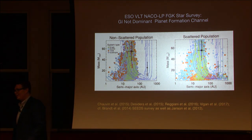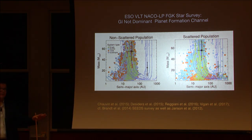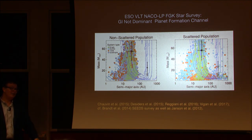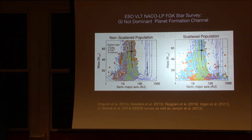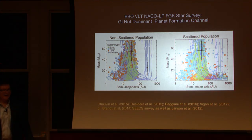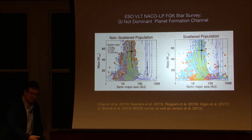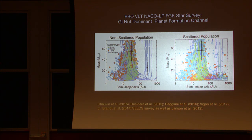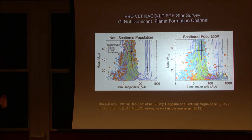We conclude that gravitational instability, while it surely happens sometimes, is not a major channel for gas giant planet formation at large orbital radii. A similar conclusion in a related sense was done by Brandt on the SEEDS survey, pointing out that the objects you do discover have a mass function weighted toward top-heavy things — more like a companion mass ratio distribution for binary brown dwarfs, not planet distributions.